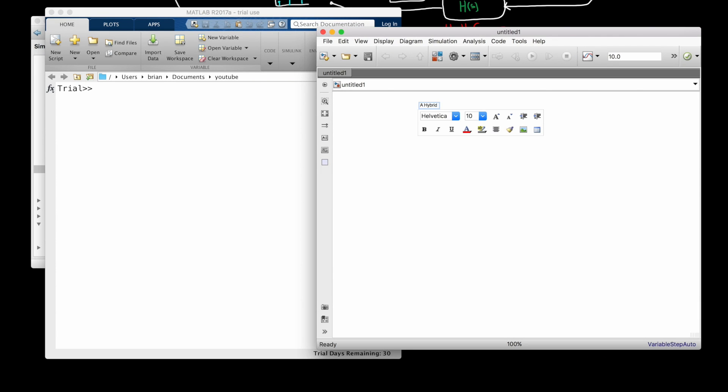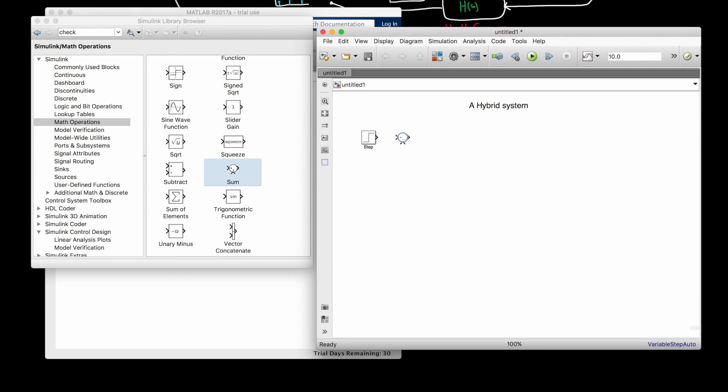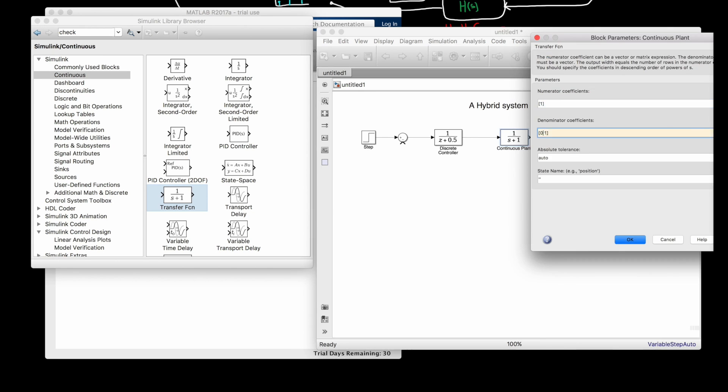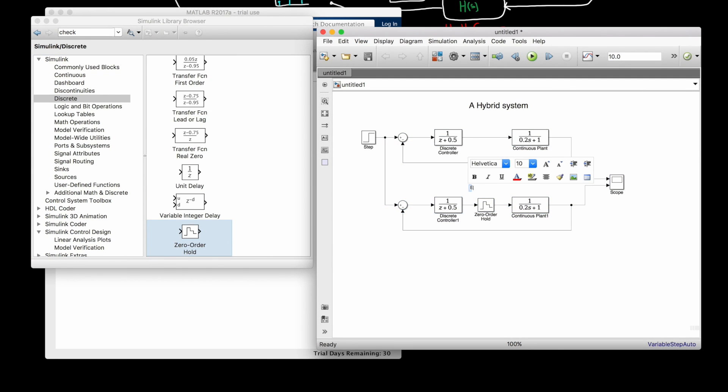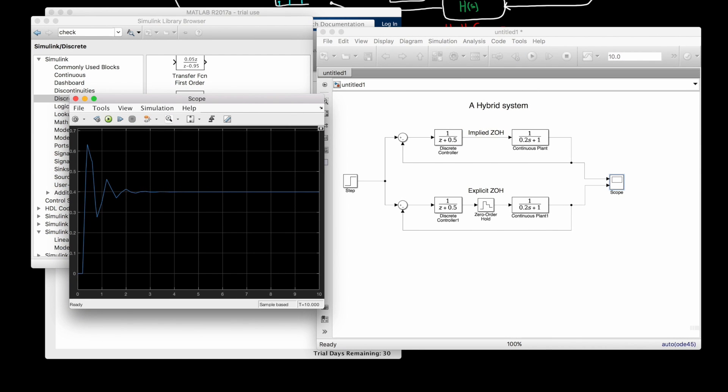First off, if you're building a hybrid model or a mixed domain model in Simulink, there is an implied zero-order hold between the discrete and continuous systems. I've set up two hybrid models in Simulink. The top one does not have an explicit zero-order hold between the two domains, I just left it off, whereas the bottom one does have an explicit zero-order hold. I've set the sample time for the two discrete systems and the zero-order hold to be the same, and I've excited both systems with a step input and plotted the two responses on the same axis.